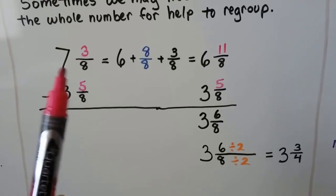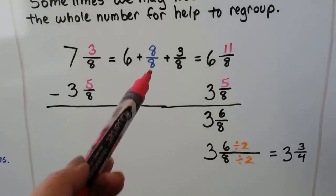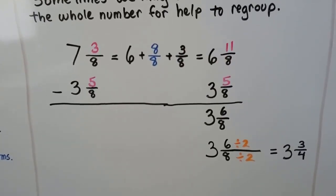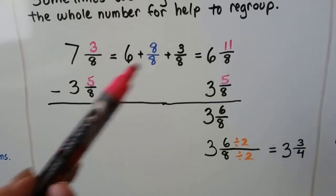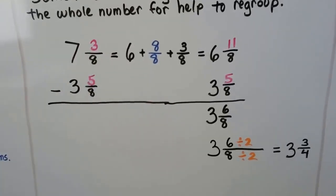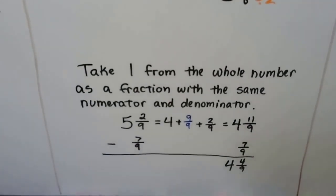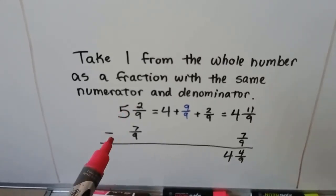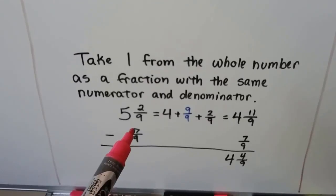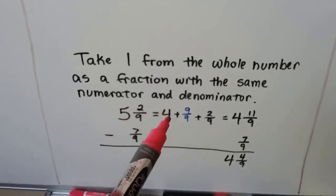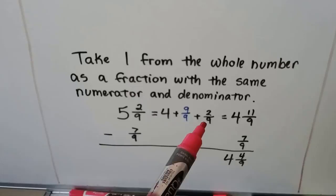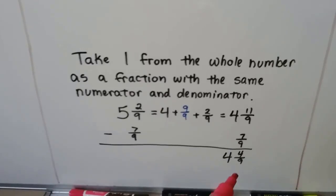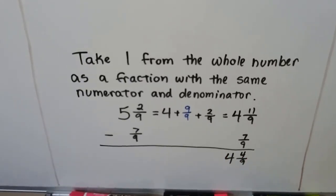It's not that it's hard — it's just that there are a lot of little steps. Remember that when the numerator and denominator are the same, you can pull one whole out; that's going to help a lot whether you're regrouping for subtraction or addition. Take 1 from the whole number as a fraction with the same numerator and denominator. For example, if we have 5 and 2 ninths and want to take away 7 ninths, the 5 becomes a 4 and gives a 9 ninths. Now we have 4 and 11 ninths — because 9 plus 2 is 11 — and we can take away 7 ninths to get 4 and 4 ninths.